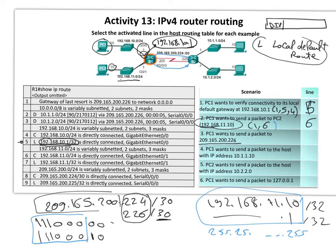PC1 wants to send a packet to the remote network. We use the procedure — line one always matches. Then 10.1.1.0 compared to 10.1.1.10 — we require three bytes matching, so that matches. Line two and line three: line three is 10.1.2 and this is 10.1.1, so line three does not match. Answer: line one and line two; we select line two.